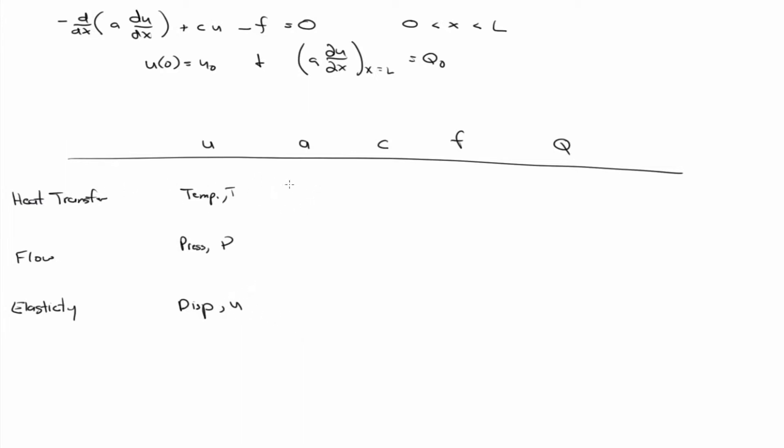So in a heat transfer problem, A would be the thermal conductivity kappa. And in our Darcy model, that would be like k over mu, permeability over the viscosity. And in elasticity, that's the stiffness, so it's AE.